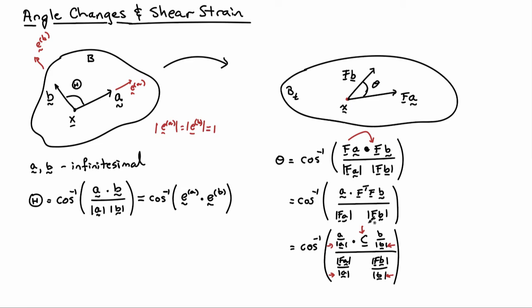Now, what you can see is that I have something that looks a little bit more familiar. In particular, in the numerator, I have EA dotted with C acting on EB. In the denominator, I have the stretches in the direction EA and the stretch in the direction EB.